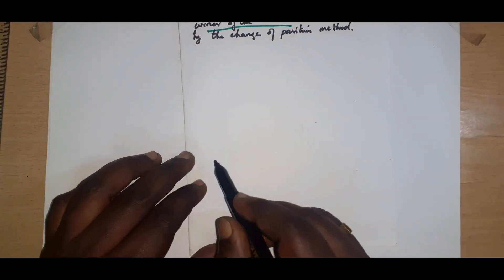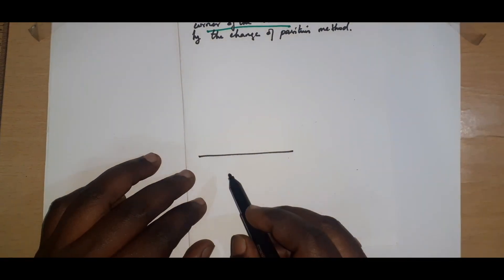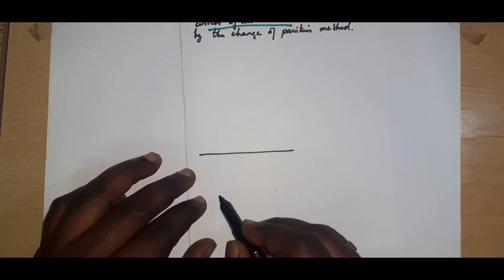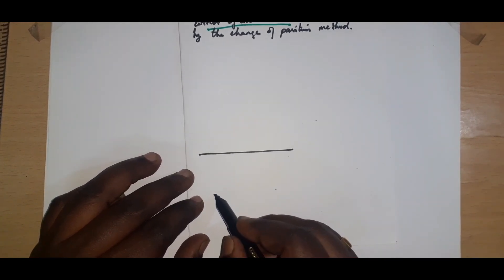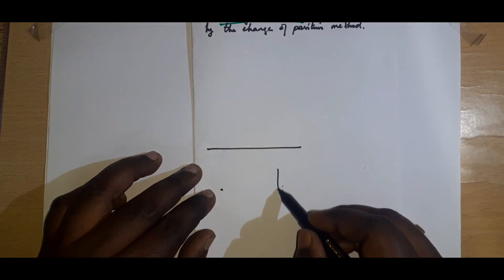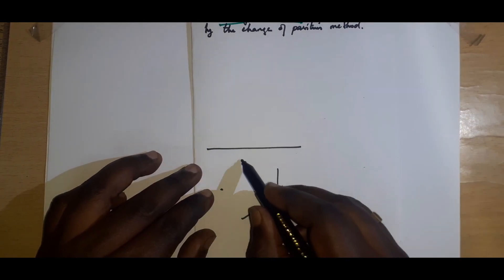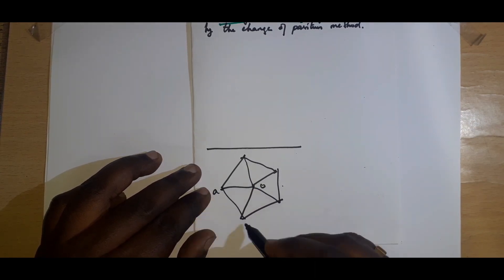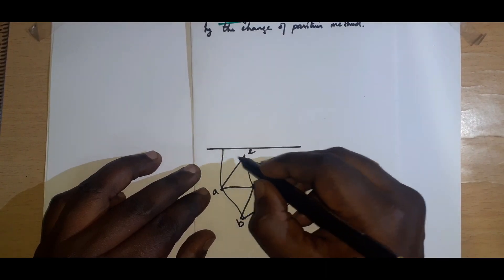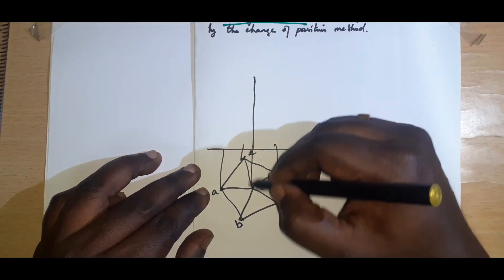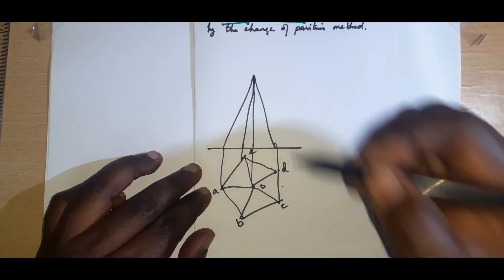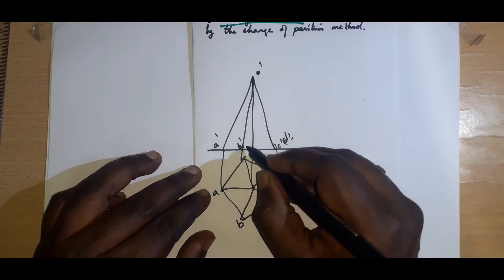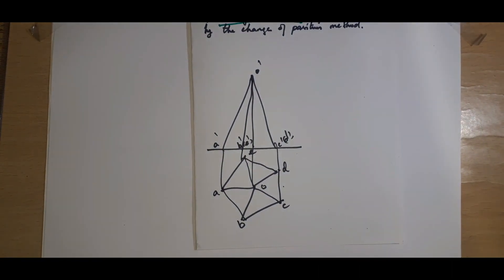First, we draw the normal diagram. We need to tie a corner, so we can select any one of the base corners. For a pentagon, the opposite side will always be an edge. Using the engineering template, we connect the points and label them A, B, C, D, E for the base corners and O for the apex. This gives us the normal front and top views of the pentagonal pyramid, which we leave as is.